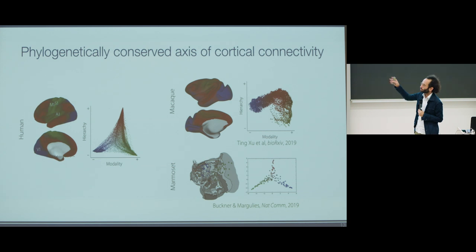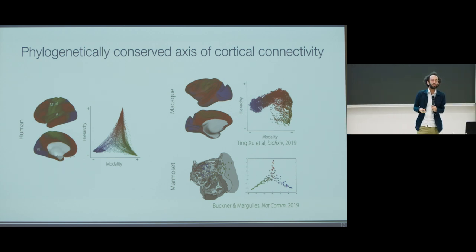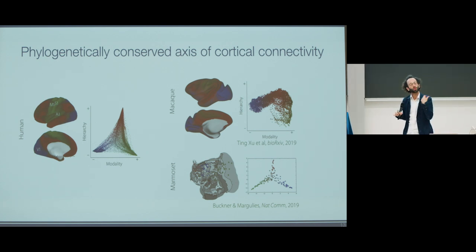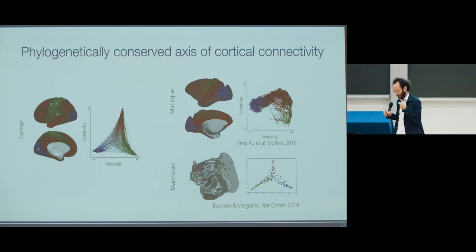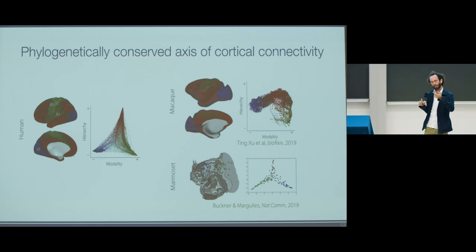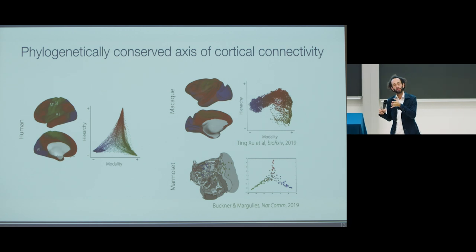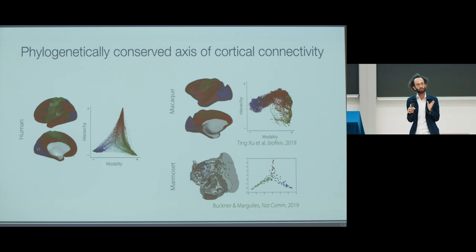We've also observed this in macaque monkey data as well as marmoset data, which raises a question of the degree to which this may be a preserved or conserved axis of phylogenetic expansion in connectivity patterns. It allows us a framework for describing these network structures across species because we no longer have to enter explicitly into the various functional definitions to debate whether it exists in other species. We can look at these dimensions of organization and use that as a reference frame to characterize correspondences across different species. It allows a different reference frame, which is valuable when moving into species where it becomes progressively more difficult to characterize precisely what the functions are.